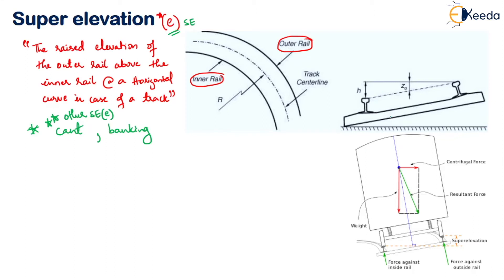Now observe this figure. This is your outer rail and this is your inner rail. If you observe, there is a raise here — this raise is nothing but your super elevation. The gauge distance D is the distance between the two rails, so let us call this as D.